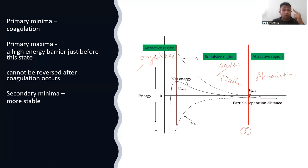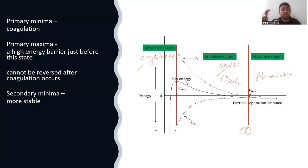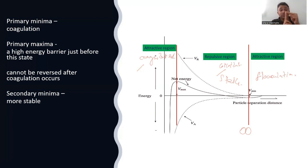In the latex industry, once you are processing latex to produce a product such as gloves, you are at a big risk the entire time because you are working with a colloidal system. At any time, due to thousands of reasons, it can coagulate. You are at big risk — in the latex industry you could even lose your job.